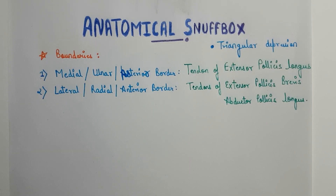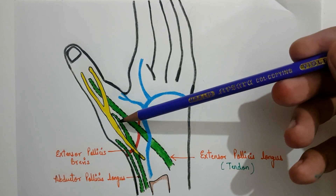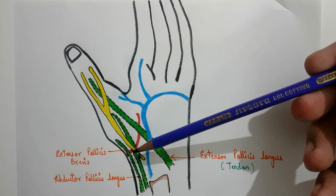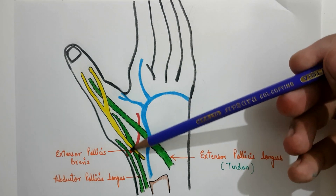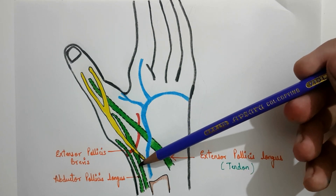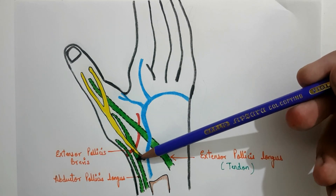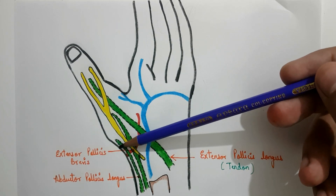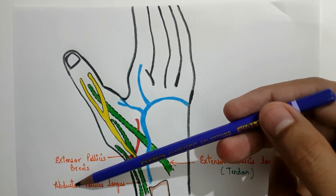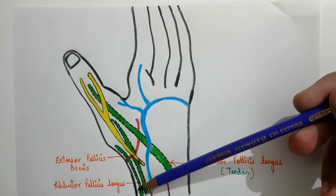The second border is the lateral boundary — that is, the lateral, radial, or anterior border — formed by the tendons of the extensor pollicis brevis and the abductor pollicis longus. This is the lateral, radial, or anterior border of the anatomical snuff box, formed by two tendons: the tendon of the extensor pollicis brevis and the tendon of the abductor pollicis longus.